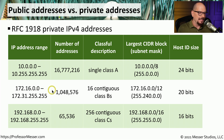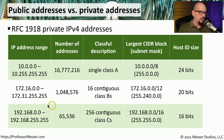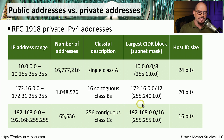The second range is 172.16.0.0 through 172.31.255.255, providing just over 1 million addresses across 16 contiguous Class B address ranges. In CIDR notation this is 172.16.0.0/12, with a decimal subnet mask of 255.240.0.0 and a host ID size of 20 bits. The third range is 192.168.0.0 through 192.168.255.255, allowing over 65,000 addresses across 256 contiguous Class C ranges. The CIDR notation is 192.168.0.0/16, with a subnet mask of 255.255.0.0 and a host ID size of 16 bits.